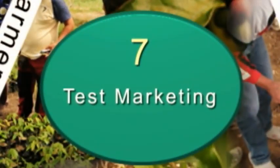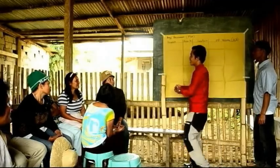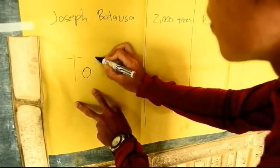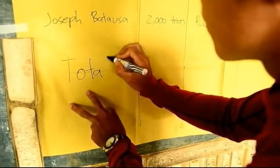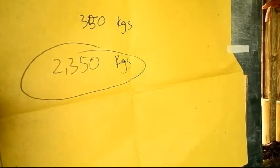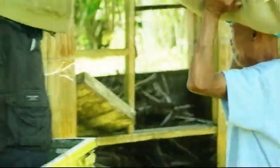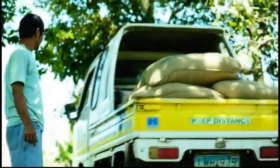Step 7 provides a venue for the cluster to implement its agroenterprise plan, starting with test marketing undertaken to prepare them for bigger market-scale activities.